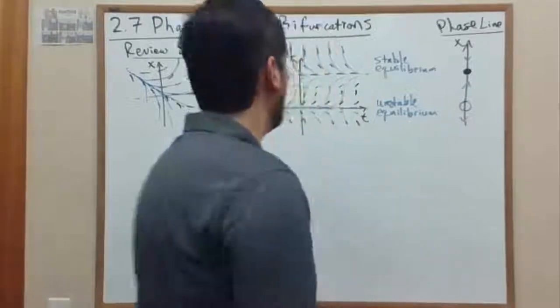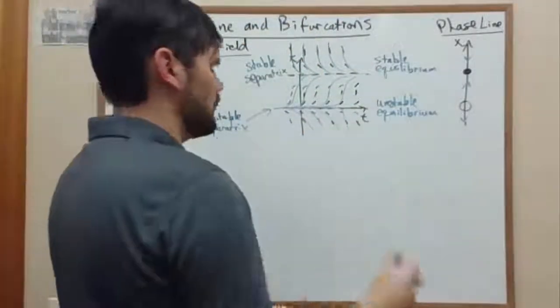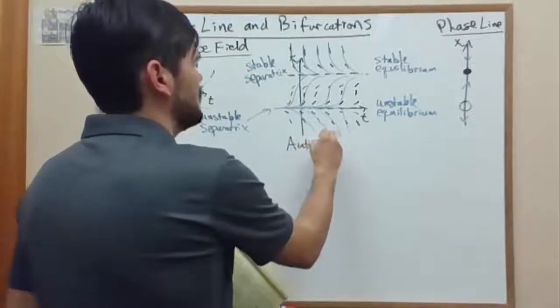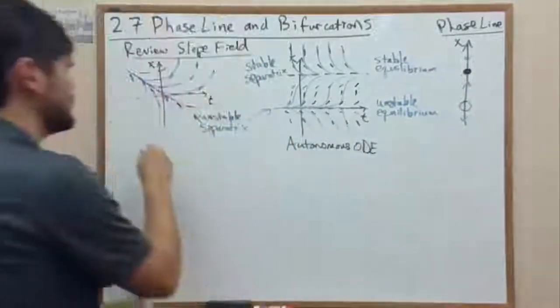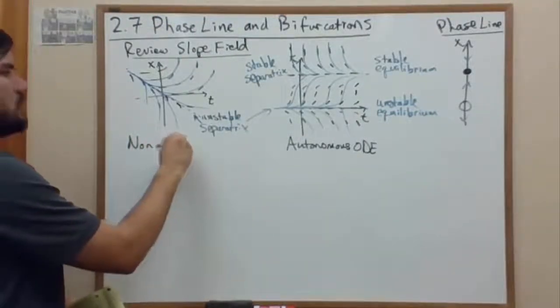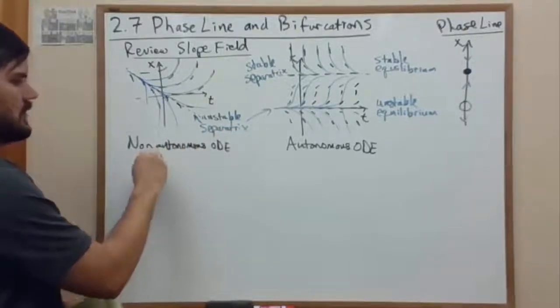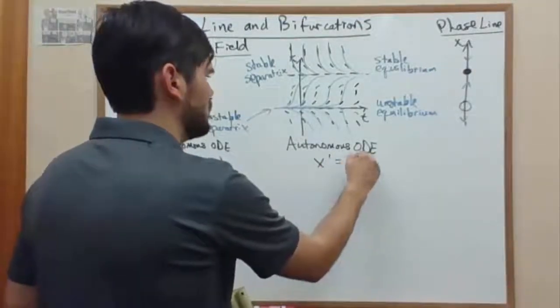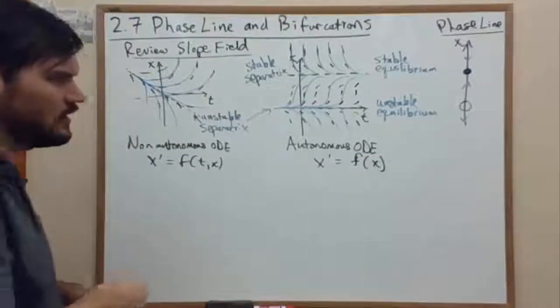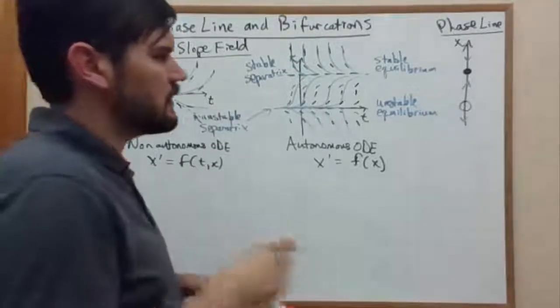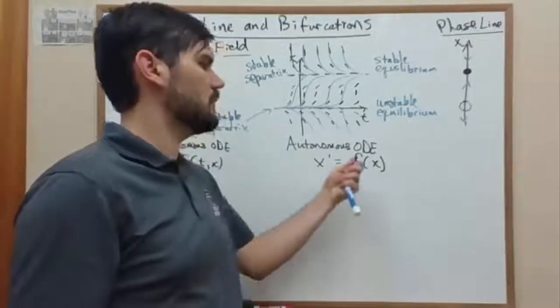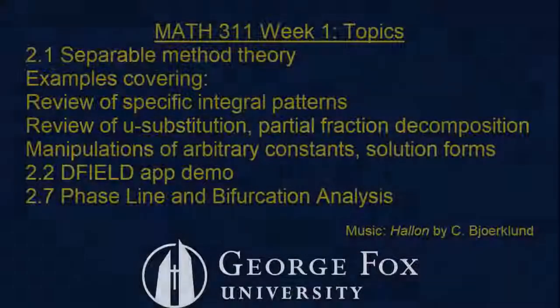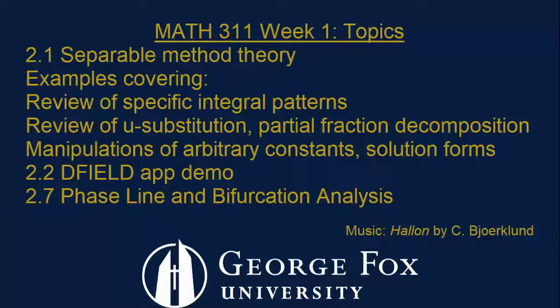So a phase line is a shorthand summary of a slope field for an autonomous ODE. And this is a non-autonomous ODE, where x prime equals a function of t and x. Whereas this one, x prime equals a function of just x. Different f's, a single function. And when we have an autonomous function where there's no t dependence on the slope function, then we can represent this whole slope field by its phase line.